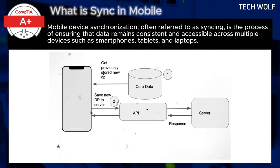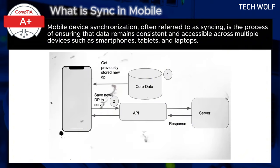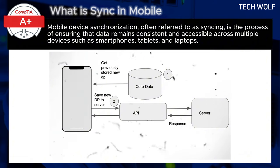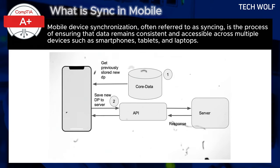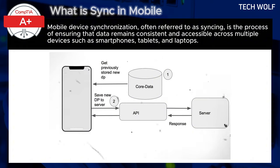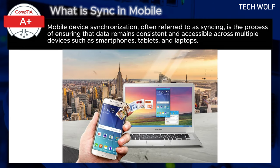Similarly, syncing your photos ensures that any pictures taken on your smartphone will instantly be available on your tablet or laptop without manual transfer. For calendars, synchronization allows any changes, such as adding or modifying events, to be reflected on all your devices. The same principle applies to contacts — adding a new contact on your phone will ensure it's available when you check your email on your laptop or any other device.